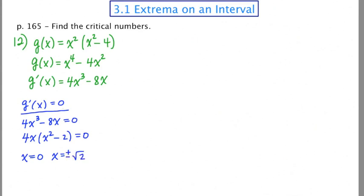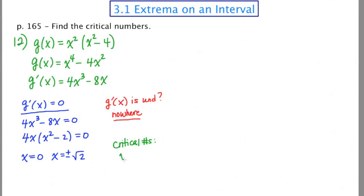The second question is: where is the derivative undefined? To answer this, we usually take the denominator of the derivative and set it equal to zero. In this case, there is no denominator, so there's no place where the derivative is undefined. That's not going to contribute to our list of critical numbers.